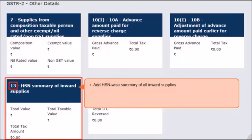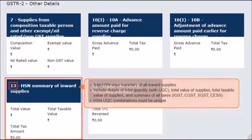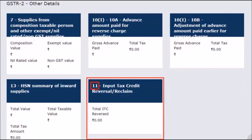In the next tile of Section 13, you need to add the HSN-wise summary of all inward supplies. This should include details of the total quantity along with the unique quantity code (UQC), total value of supplies, total taxable value of supplies, and all taxes — IGST, CGST, SGST, and CES — paid on the inward supply. Please make sure that the HSN-UQC combination is unique. Lastly, the tile for Section 11, input tax credit reversal or reclaim, is for declaring the reversal or reclaim of ITC credit for that tax period. This reversal of ITC adds up to the total liability and also covers cases of reclaiming ITC which was earlier reversed, thereby reducing the output tax liability.